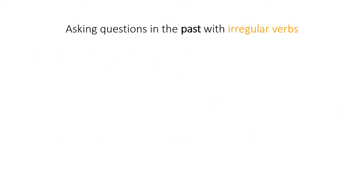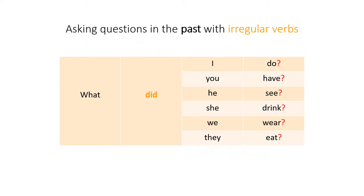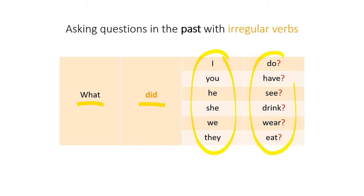So to ask questions in the past with irregular verbs, we can use this chart. It says: what did, and then I, you, he, she, we, or they, and then the verb.